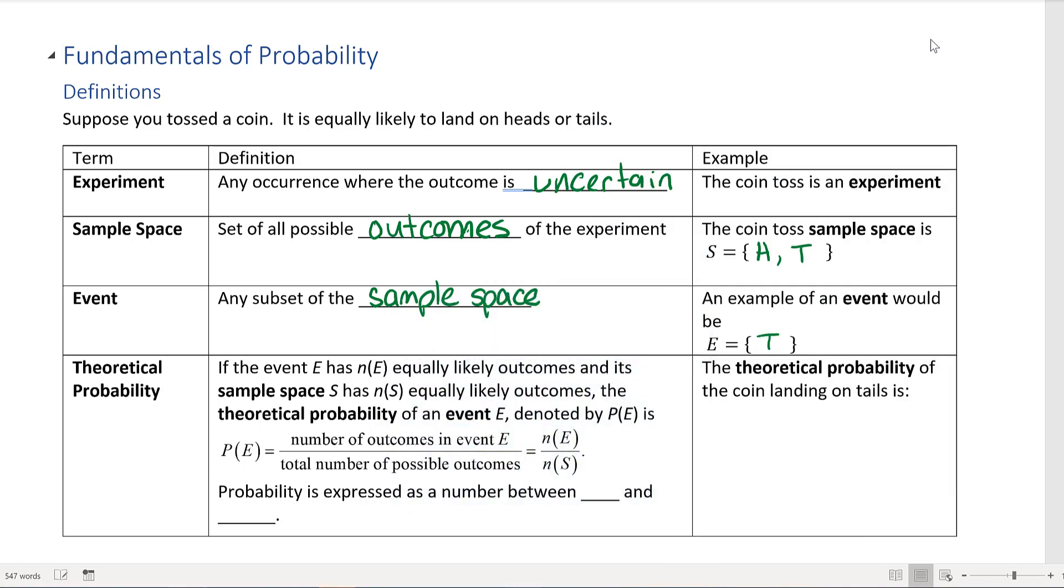The theoretical probability: if the event E has n(E) - remember that's the number of items in the event - equally likely outcomes, and its sample space S has n(S) equally likely outcomes, then the theoretical probability of an event E, denoted P(E), is equal to...